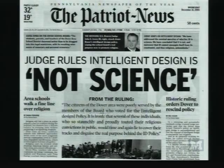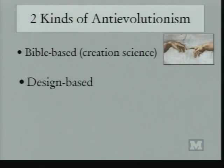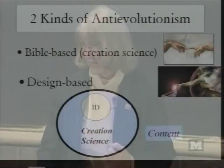I want to talk tonight about intelligent design, but in order to understand intelligent design, you really need to know something about creationism in general in the United States, because intelligent design is a descendant with modification of an earlier form of creationism called creation science. Basically, there are two kinds of anti-evolutionism in the United States today: the Bible-based or creation science variety, and the intelligent design variety. In content, intelligent design is merely a subset of creation science. Everything you read or encounter in intelligent design creationism is found in creation science.